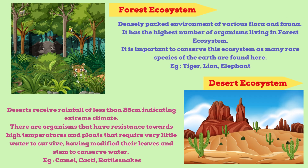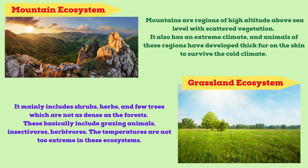Forest ecosystems are densely packed environments of various flora and fauna, with the highest number of organisms. It is important to conserve these ecosystems as many rare species are found here, such as tigers, lions and elephants. Desert ecosystems receive rainfall of less than 25 cm, indicating an extreme climate, with organisms that have resistance to high temperatures and plants that require very little water to survive, such as camels, cacti and rattlesnakes.